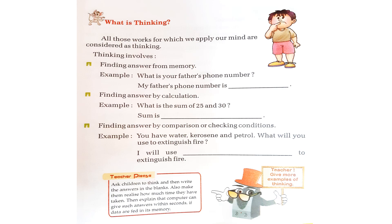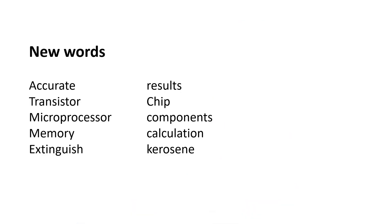Now, I will give you a few notes. These are the new words: accurate, results, transistor, chip, microprocessor, components, memory, calculation, extinguish, kerosene. Now, children, take your rough note and write these words five times in it and try to learn these words.